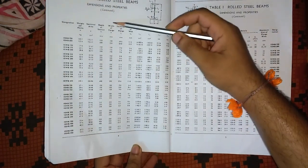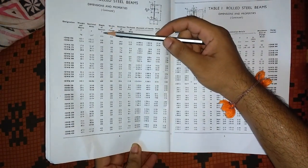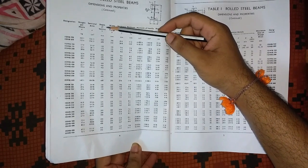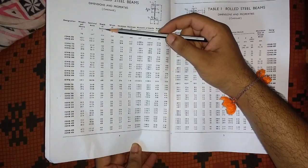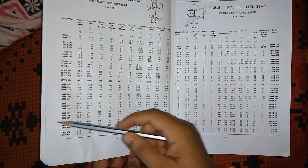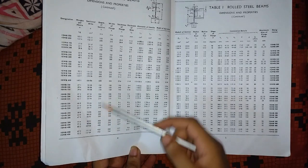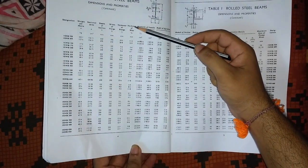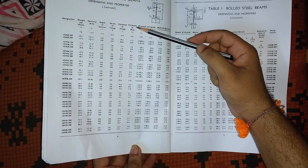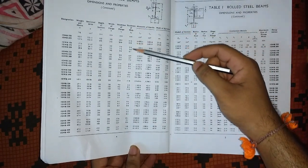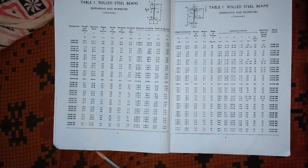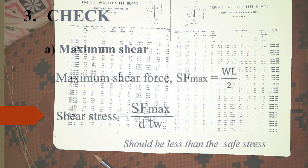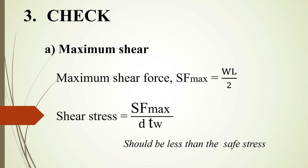From the steel table SP6, we read the depth of section d and the thickness of the web tw corresponding to our selected designation. We substitute those values into the shear stress formula. The calculated shear stress should be less than the permissible shear stress. If it is within the limit, the section is safe in shear.